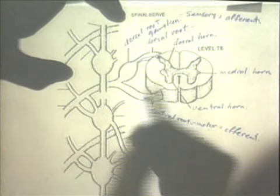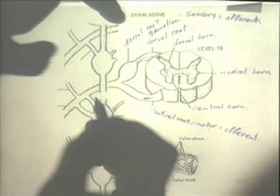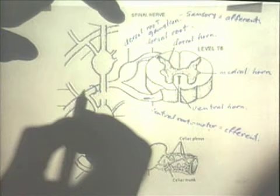The spinal nerve is made up of a combination of motor nerves and sensory nerves. They combine into a single nerve, which is called the spinal nerve.